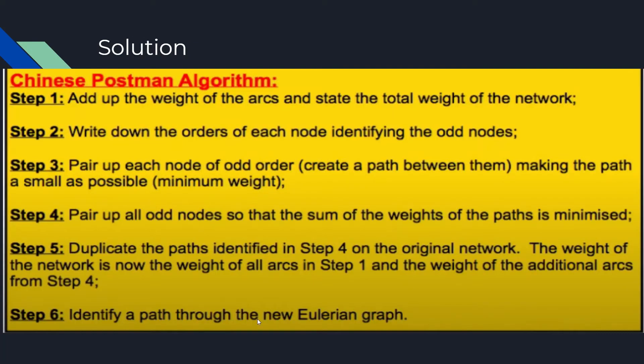So, let's get into the algorithm for our solution. Step one of our solution is to first add up the weights, if there are weights, of the arcs or edges, and state the total weight of the whole network. The next step is to write down the orders of each node, identifying the odd nodes.